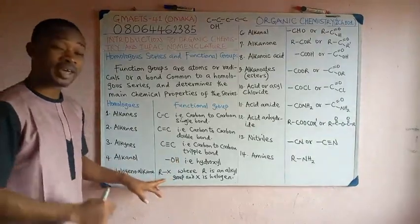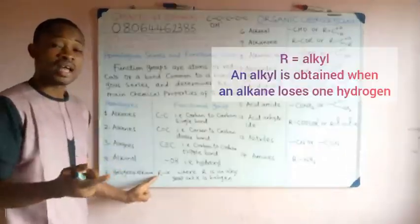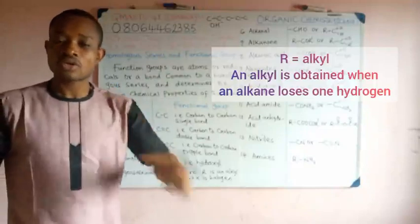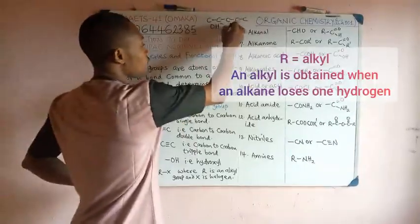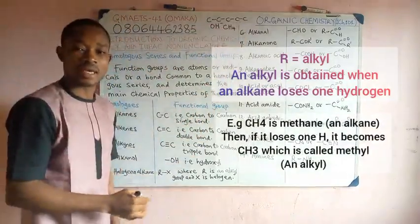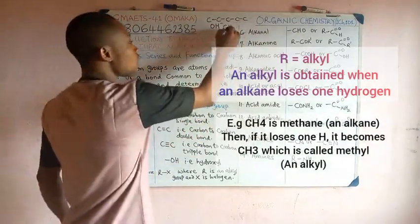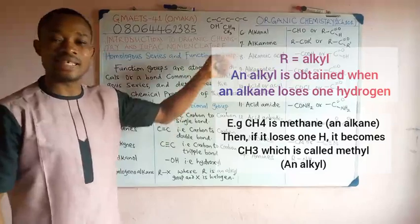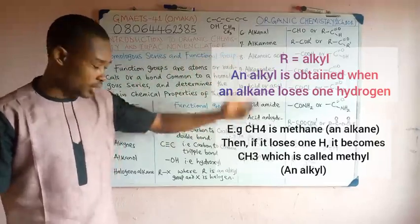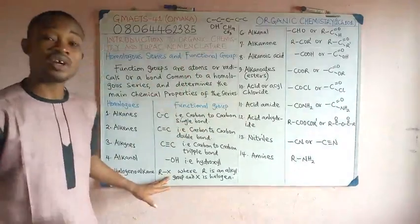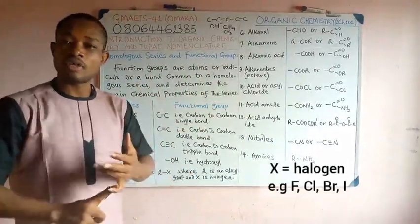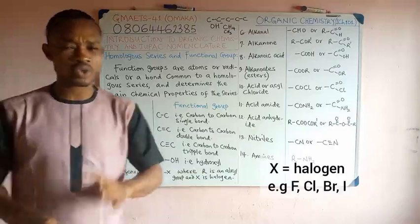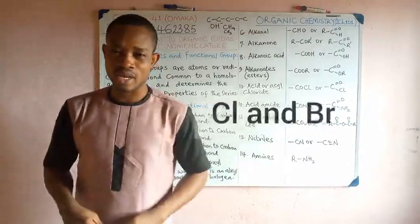We have for halogenyl alkane, that is R-X. This R is an alkyl. An alkyl is an alkane that has lost one hydrogen. For example, we know CH4 to be methane. Methane is an alkane. If it loses one hydrogen, it becomes CH3. This CH3 is an alkyl called methyl. We have other ones like ethyl, propyl. X here is a halogen. So, you can think of fluorine, bromine, chlorine, iodine. In most cases, in the study of organic chemistry, we use more of chlorine and bromine.